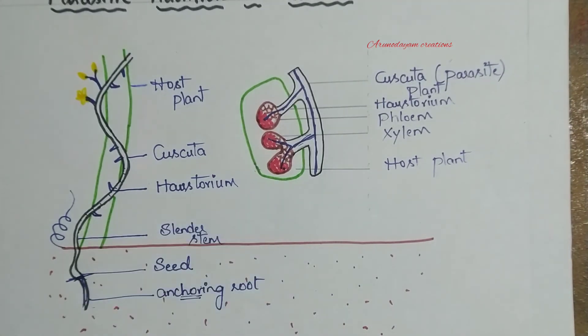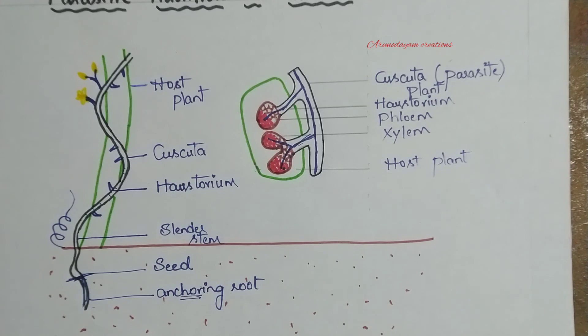This is the Cuscuta plant and parasitic nutrition. There are also other parasitic plants — for example, Viscum and Rafflesia also show parasitic nutrition.